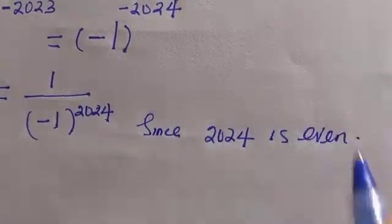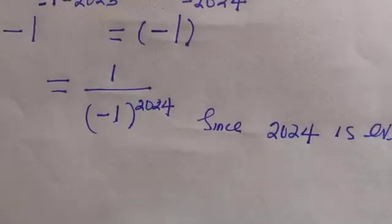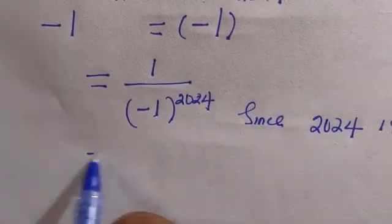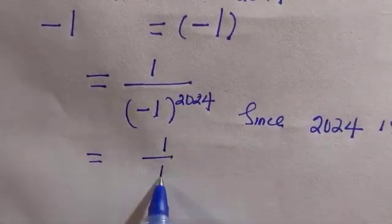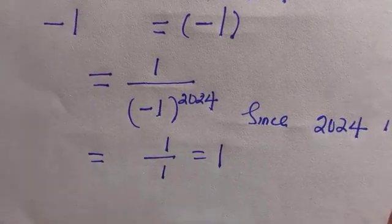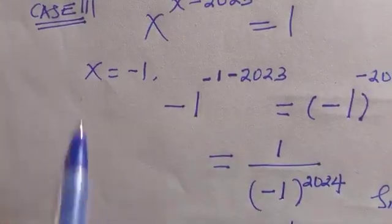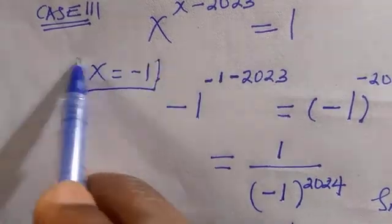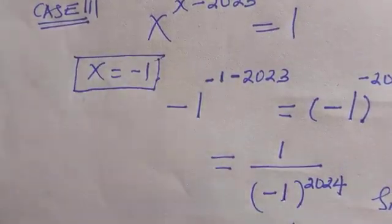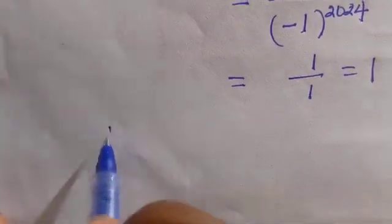Therefore we have 1 divided by 1, which equals 1. At X equals minus 1, it also satisfies the equation, and we have gotten three different solutions for X in this problem.